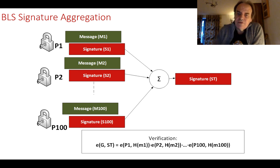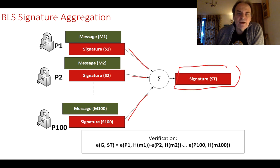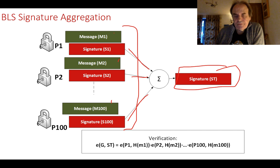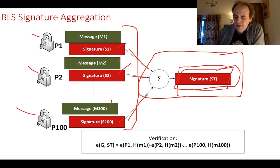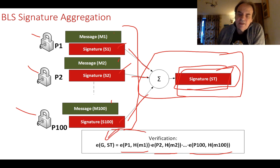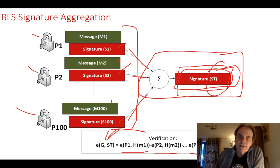One of the great advantages of BLS signatures is that we can aggregate multiple signatures into one. We might have multiple messages — say a hundred Bitcoin transactions in a block. By taking each public key, signing each message, and then simply adding the signatures together, we get one aggregated signature. We then verify by taking each public key paired with the hash of its message, multiplying them together, and checking it equals E(G, S_total).